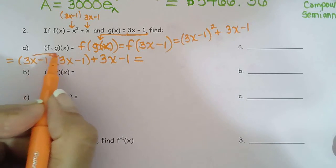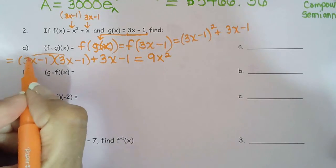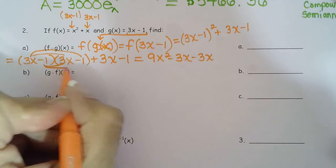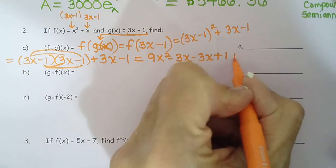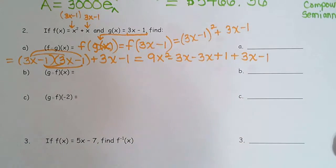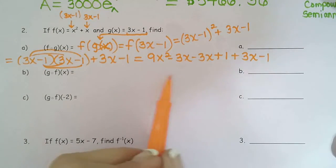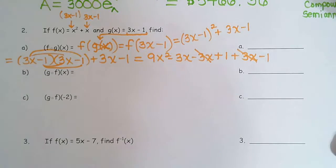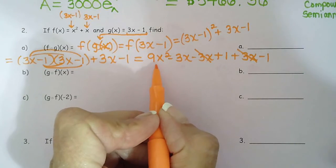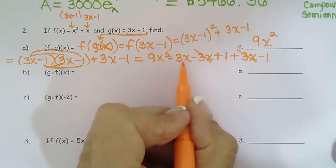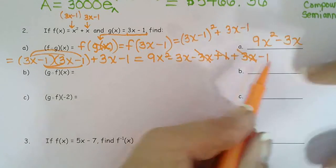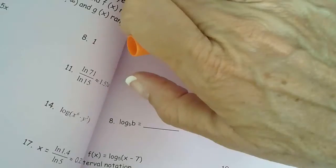So this is going to be (3x minus 1)(3x minus 1). Be sure to still bring down the plus (3x minus 1) term because otherwise you'll get so involved in the FOIL and forget about it. FOILing gives us 9x² from First, negative 3x from Outer, negative 3x from Inner, and positive 1 from Last. So we have 9x² minus 3x minus 3x plus 1 plus 3x minus 1. The minus 3x and plus 3x cancel, and the plus 1 and minus 1 cancel too. So the answer is 9x² minus 3x.